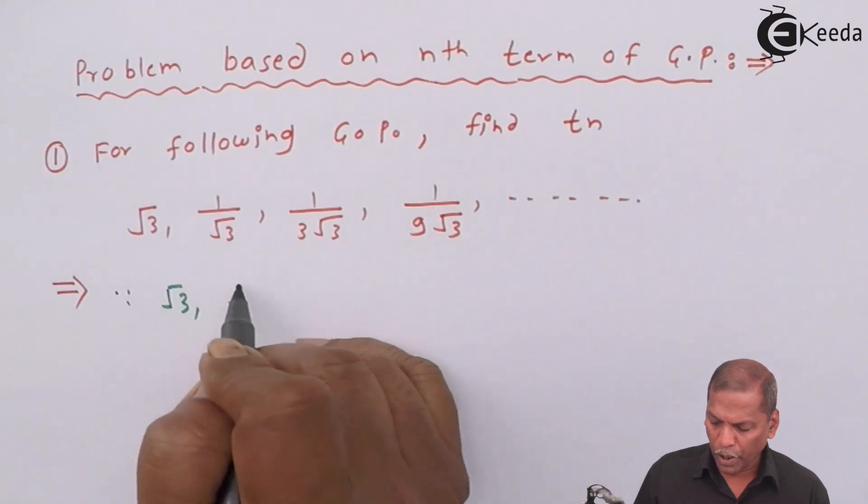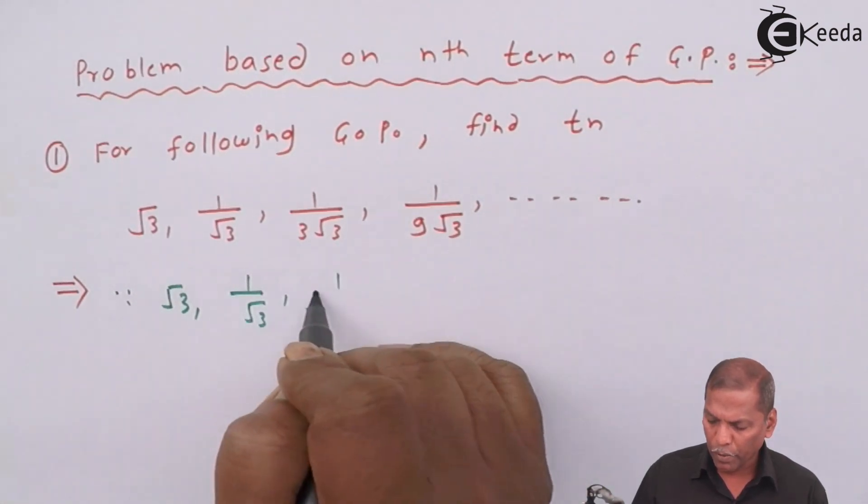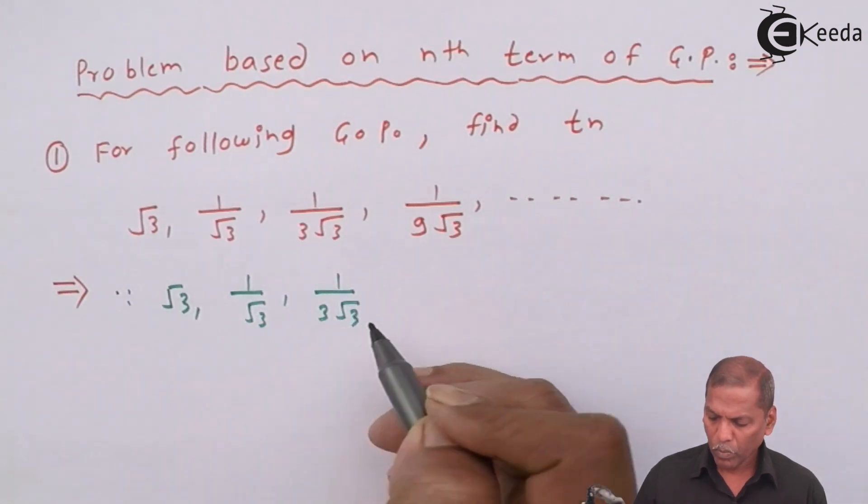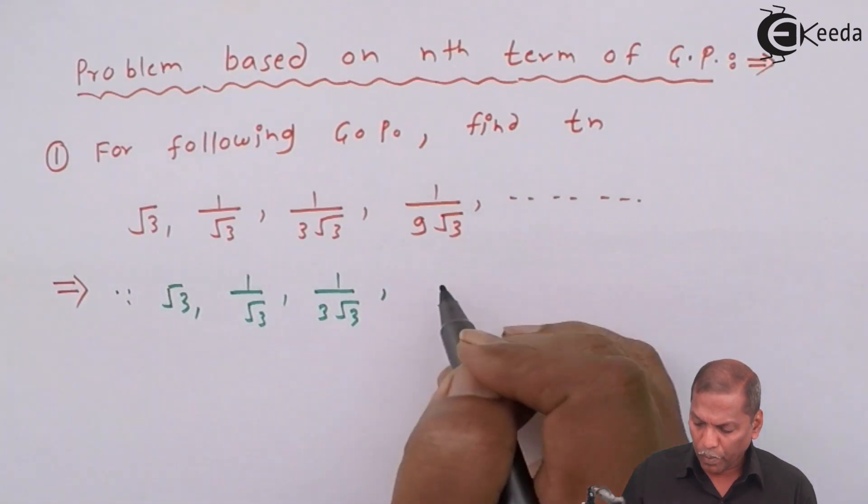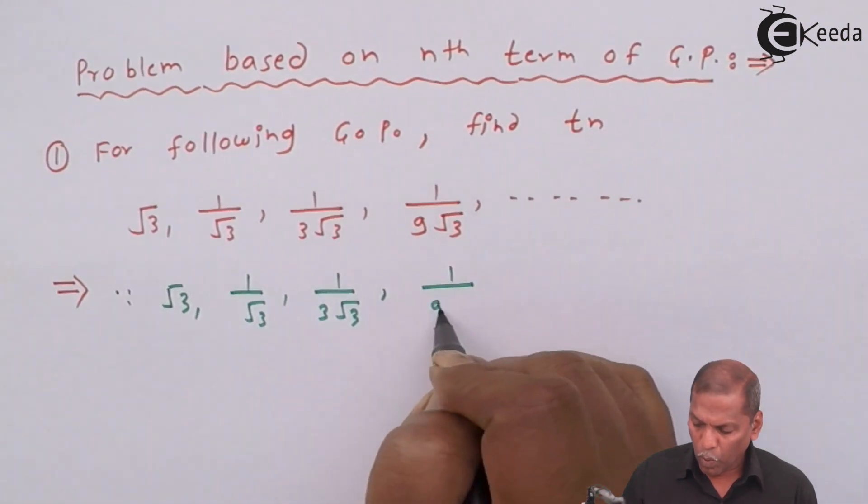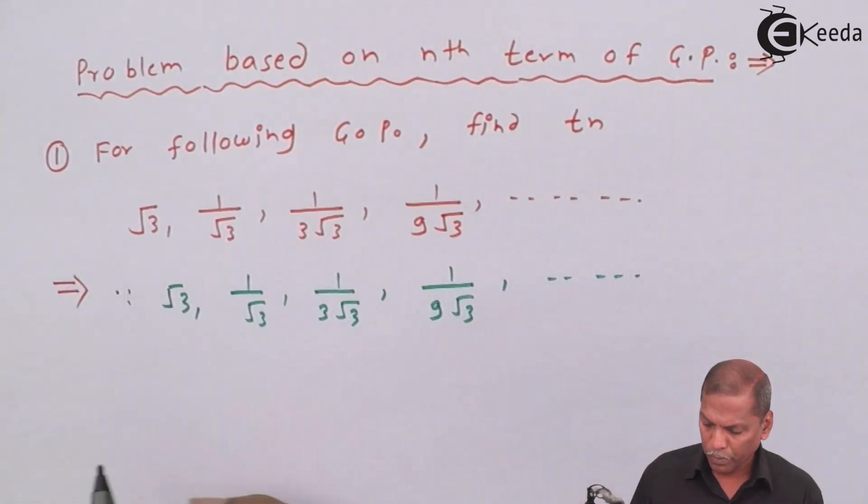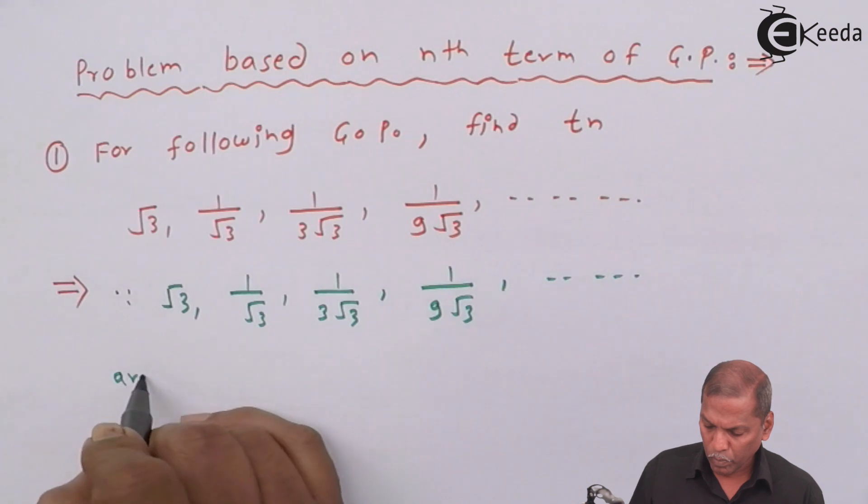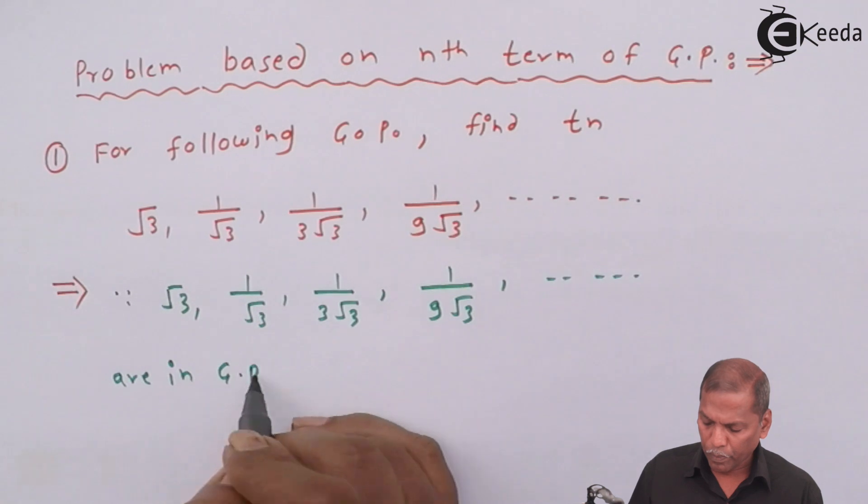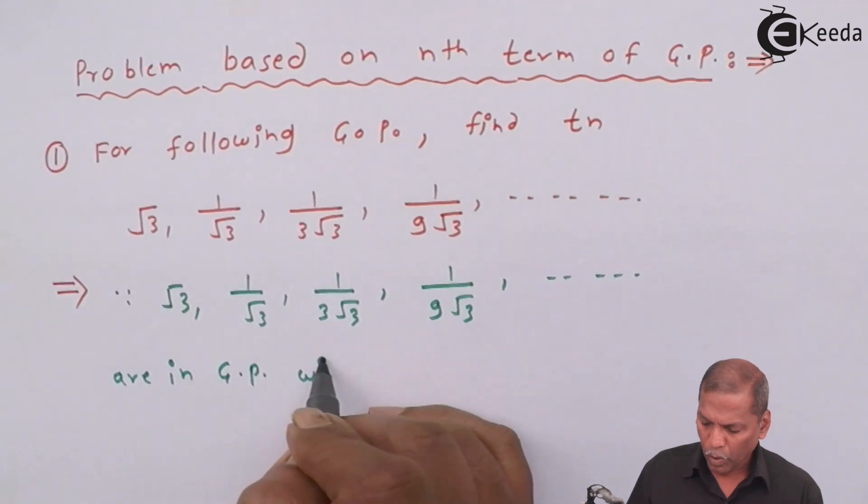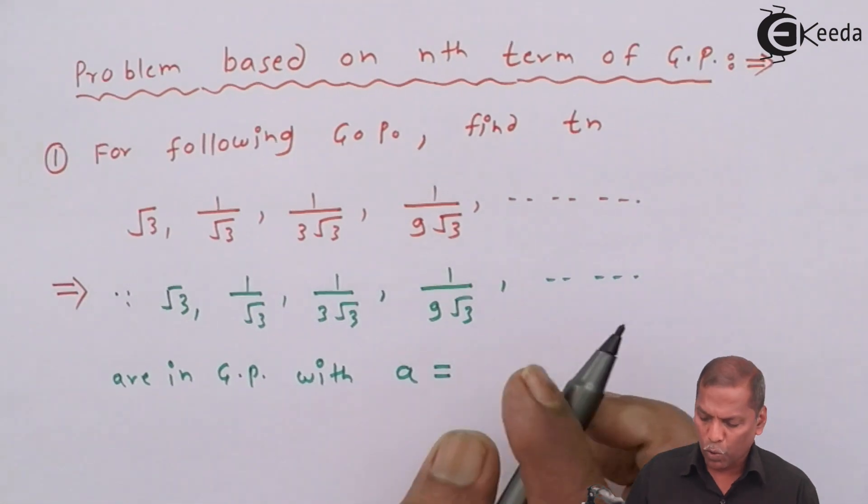Since root 3, 1 by root 3, 1 upon 3 root 3, 1 upon 9 root 3 and so on, are in GP with first term a equal to root 3.